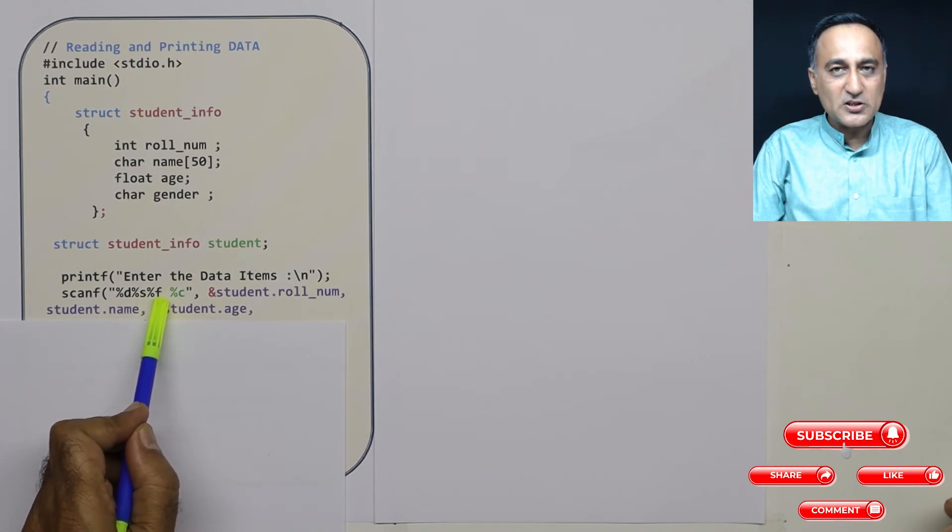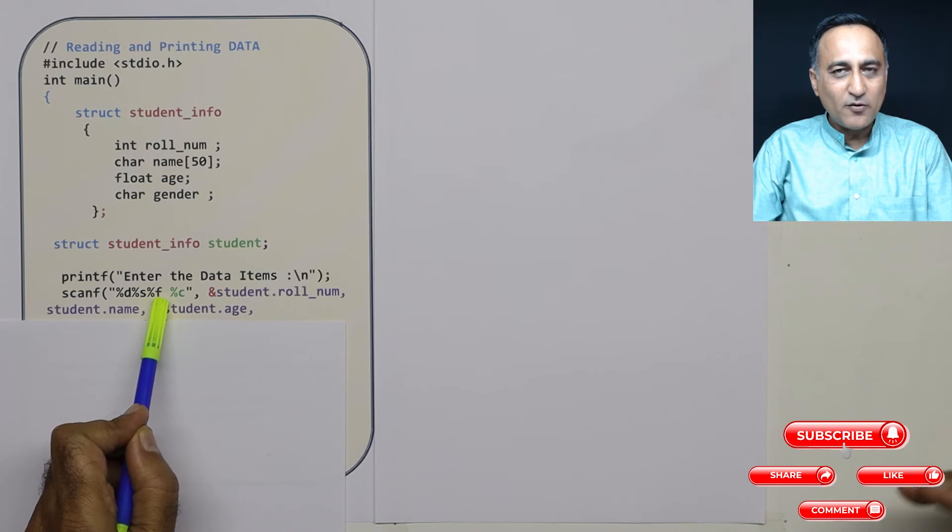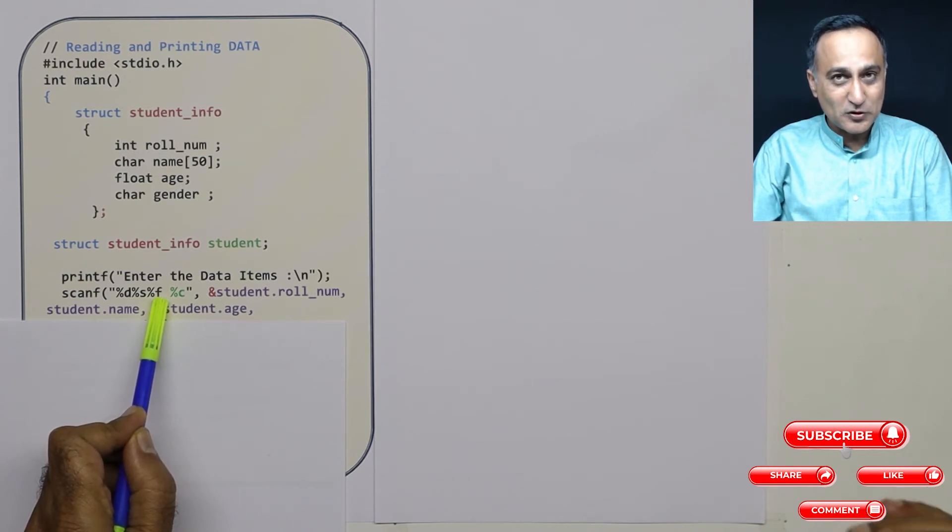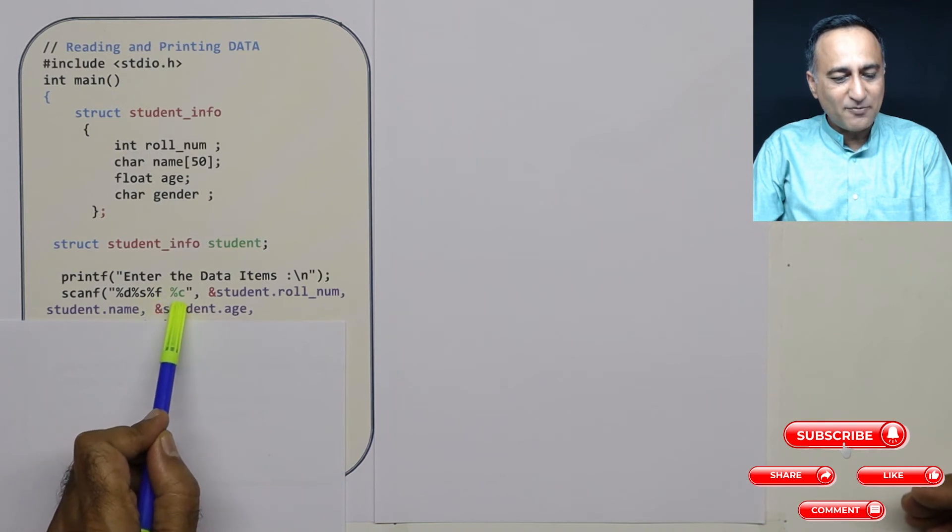Observe why I have given this space. This will be clear when you look at the demo which follows this video. Please observe this space, really important. Then I have percentage C.